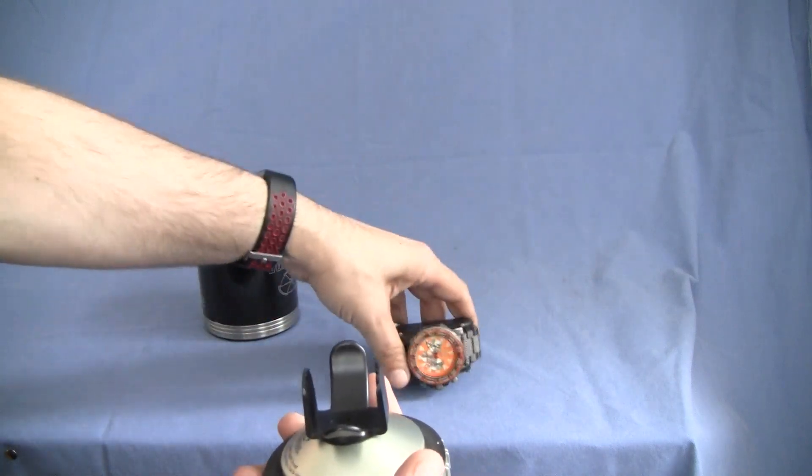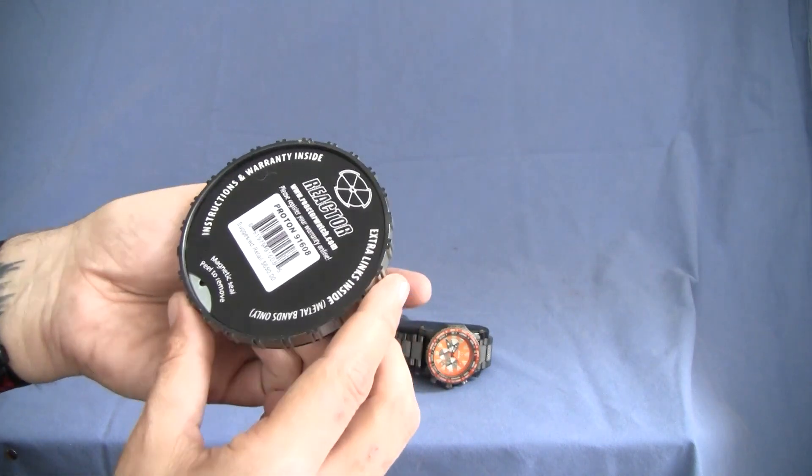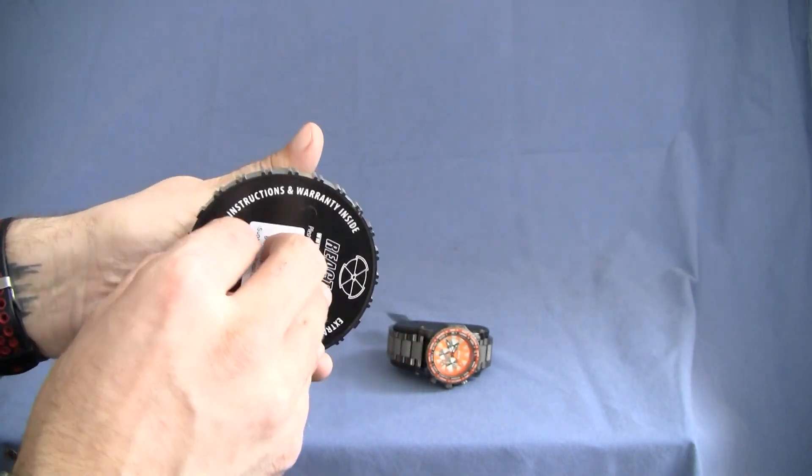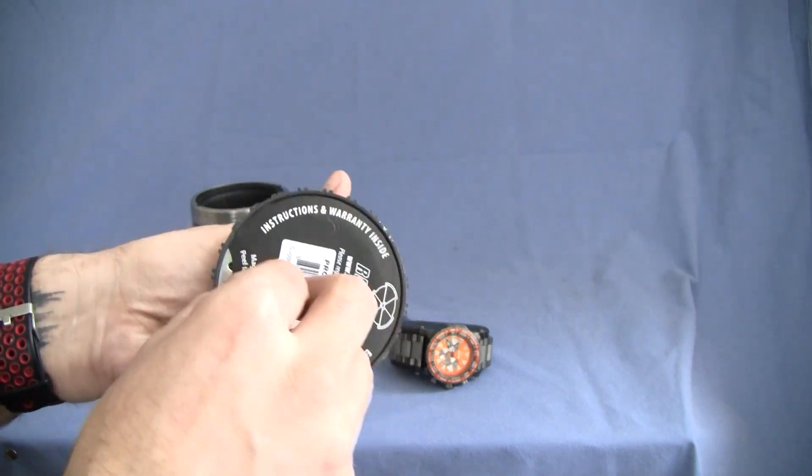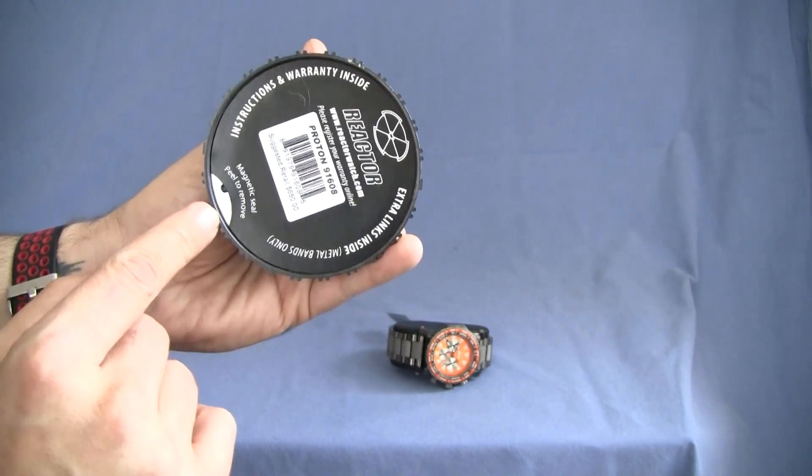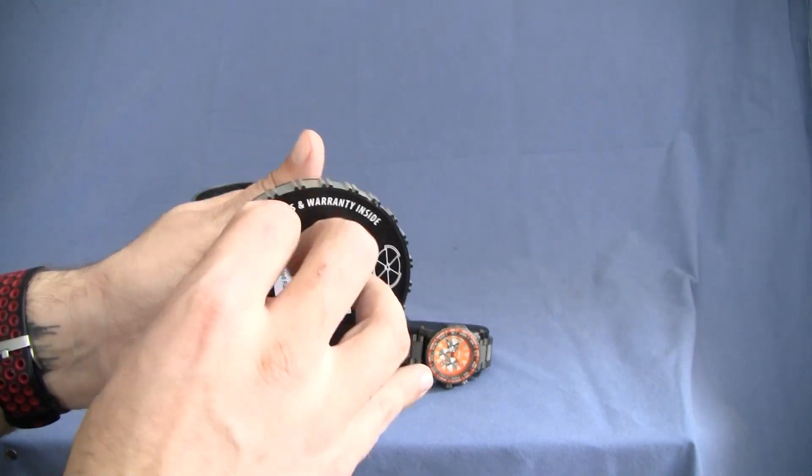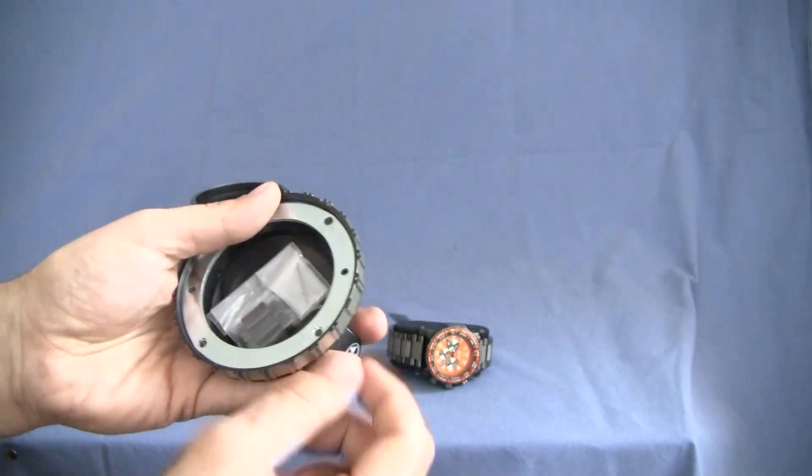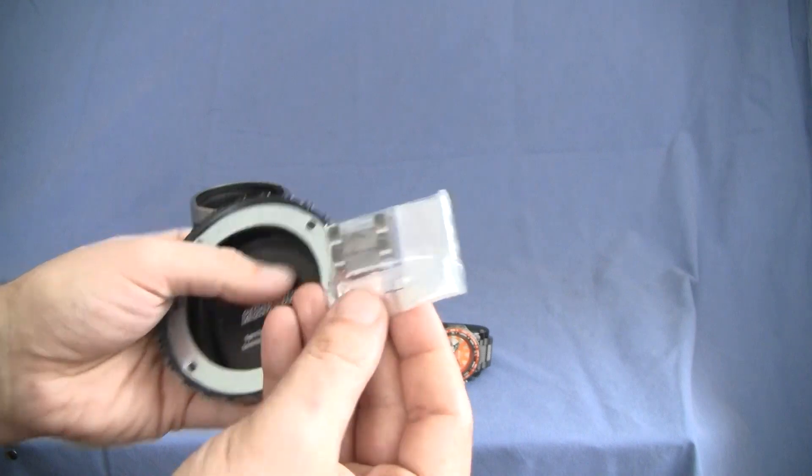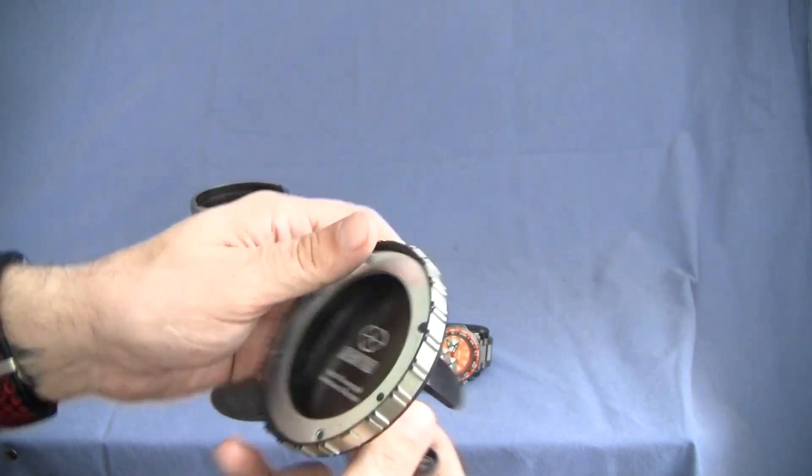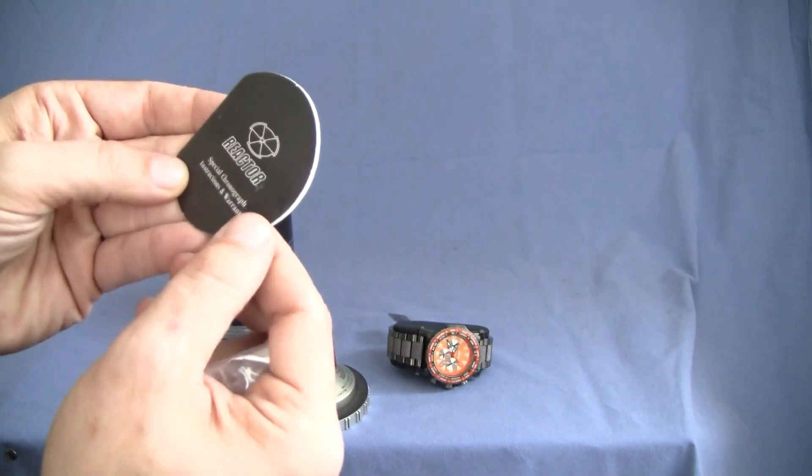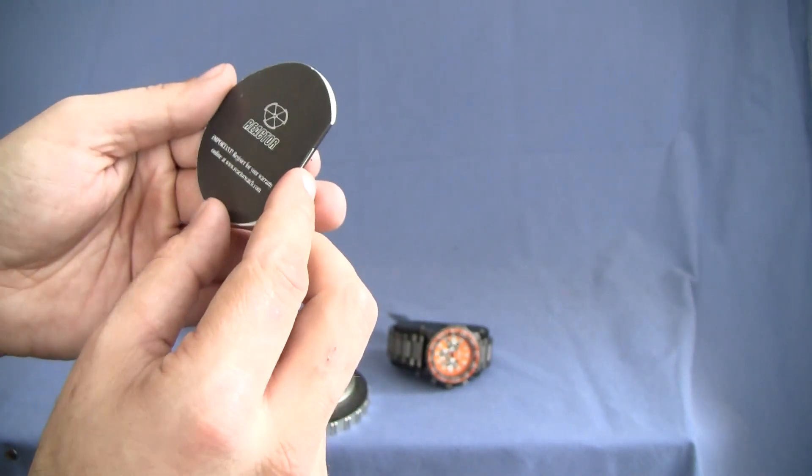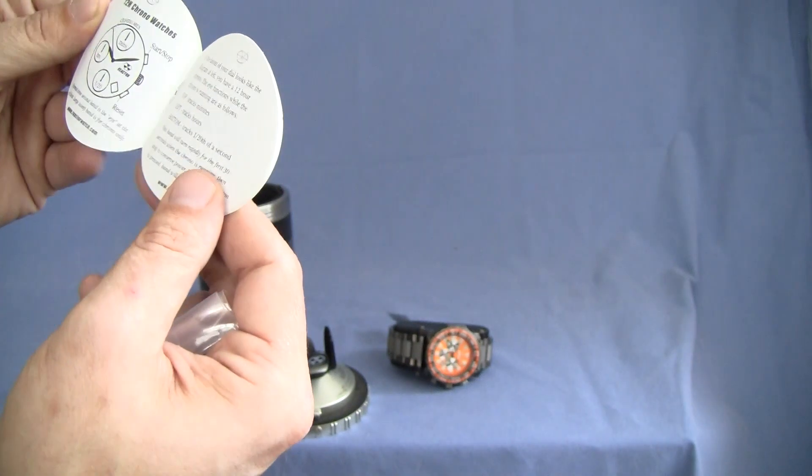If we look at the rest of this case for a second, in the bottom, this is where they store all of their warranty card and instructions and stuff. It's just a magnetic pull to remove. So you can see that's just one big magnet. And in here we have some extra links and then the special chronograph instructions and warranty card.